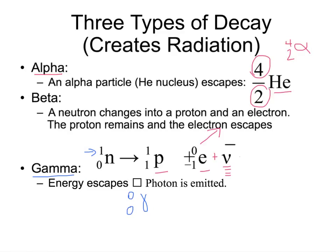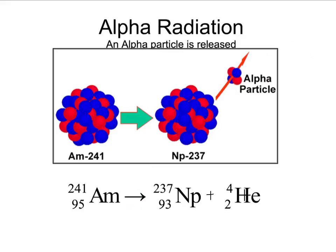Let's take a look at what they look like. Here is an example of alpha radiation. As we can see, we start with a large atom, americium-241. What's going to happen is we're going to lose an alpha particle. That's over here with our helium. Remember, this can be also shown as an alpha particle like that.